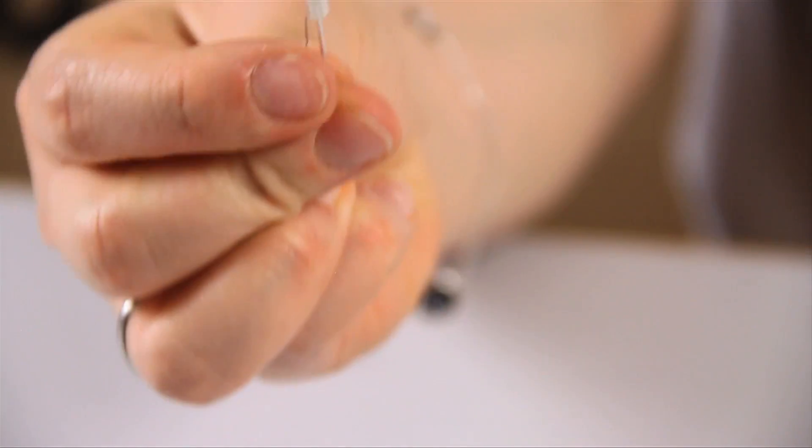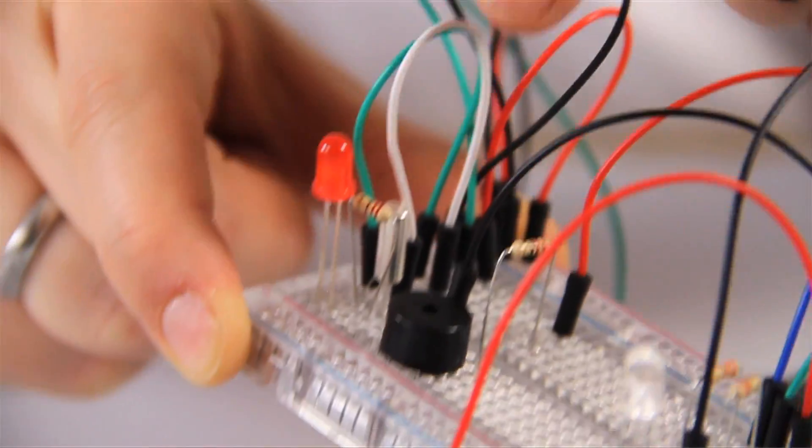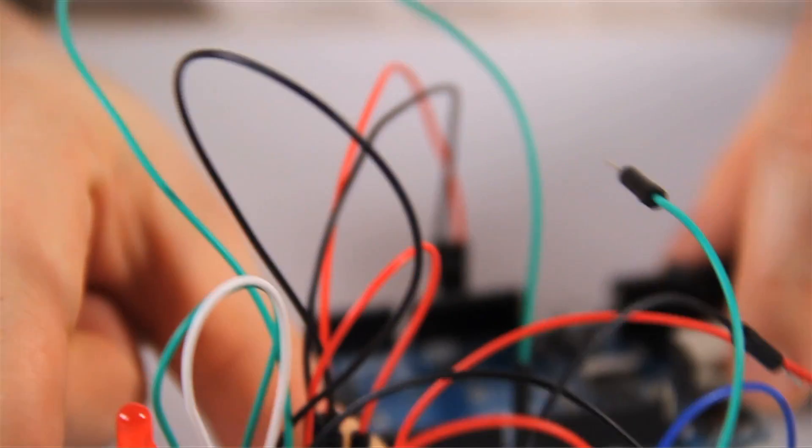The next one is this strange object. It's called the tilt switch. If you shake it, you can hear a little bead inside it moving around. This is the part which allows you to open or close a circuit when tilted upside down. So you're making or breaking a circuit like that.